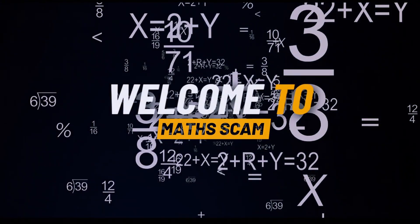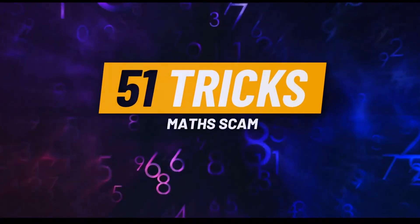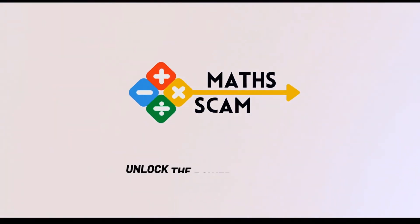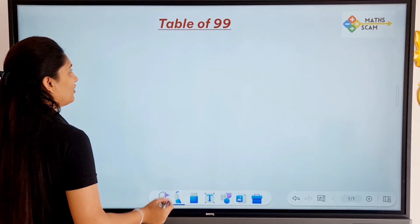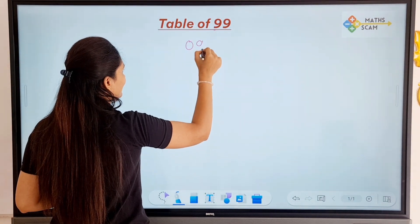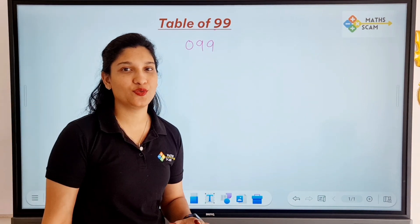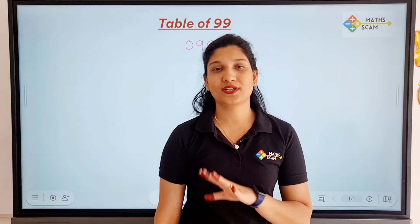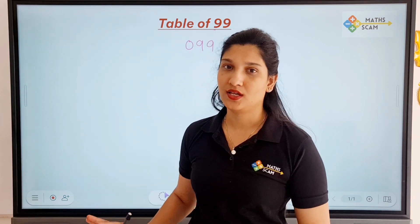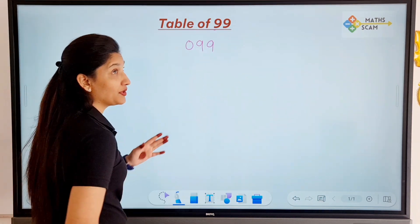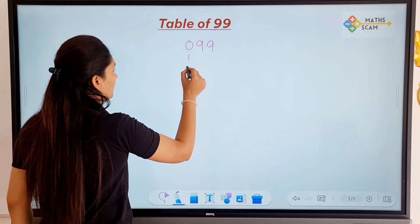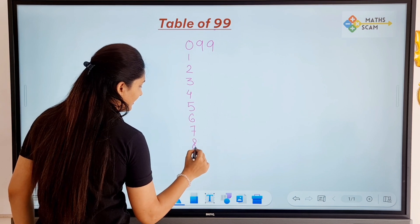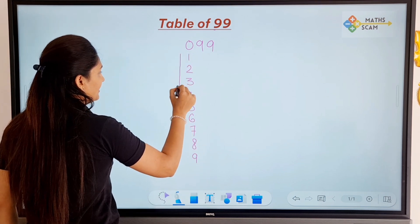So let's start. What we are going to do is write down 0 to 9 in ascending order first. Everyone knows the table of 9, right? So same we are going to write down here. For the hundreds place, we write 0 to 9 in ascending order: 0, 1, 2, 3, 4, 5, 6, 7, 8, 9. This is ascending order.